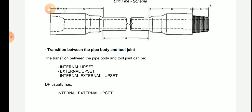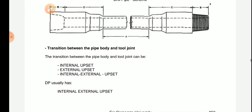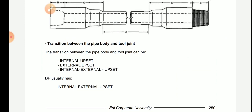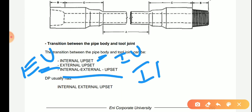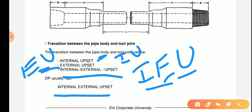There are three transitions between the pipe body and the tool joint. The first one is IU — internal upset. The second one is EU — external upset. The third one is IEU — combined internal-external upset. Drill pipe usually has internal-external upset. This is very important: drill pipe has both internal and external upset.